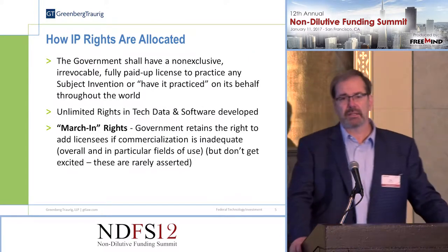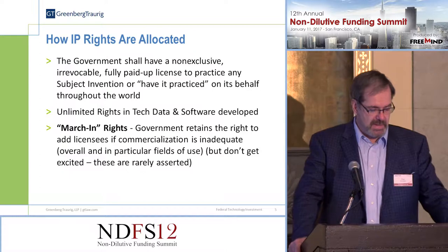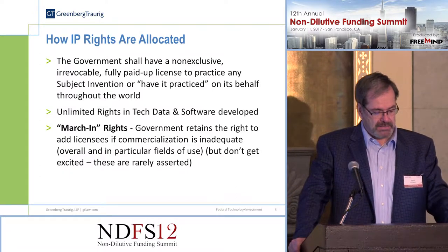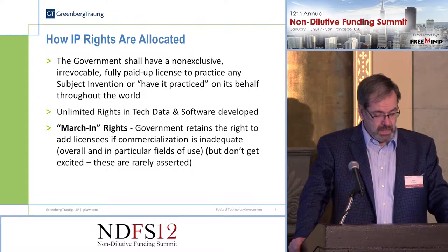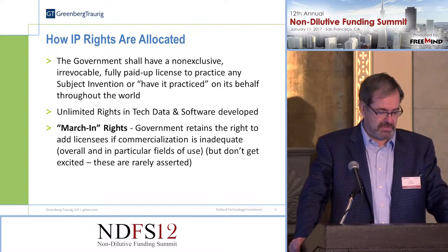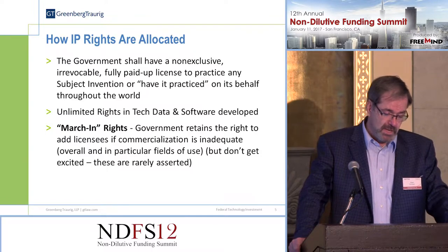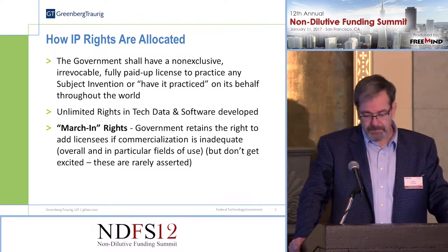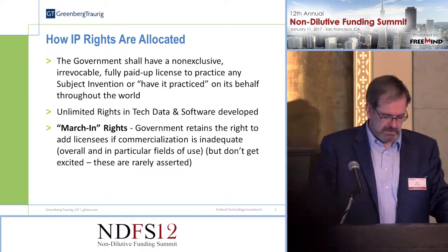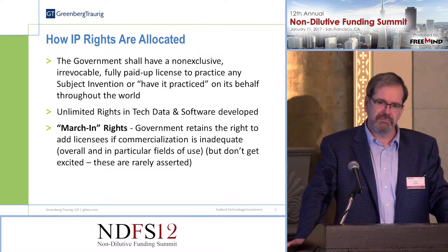In terms of allocation of rights, the general outline is that the government retains a non-exclusive, irrevocable, fully paid-up license to practice any subject invention, or have it practiced on its behalf, throughout the world. That is the license right the government retains. They also get unlimited rights to data called for as deliverable and software asked to be developed. They also retain certain march-in rights, which are bolded here largely because they are overemphasized with regard to VC concerns.